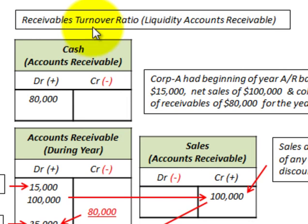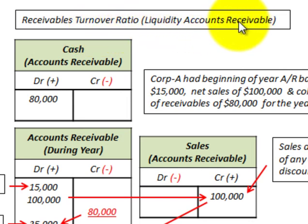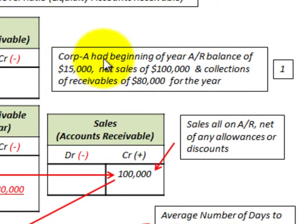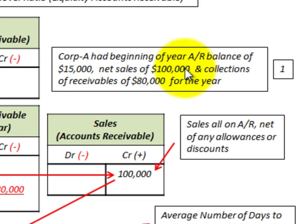Here we're going to be looking at a receivables turnover ratio, and that's the liquidity of accounts receivable. For example, Corporation A had a beginning of the year accounts receivable balance of $15,000, net sales of $100,000, and collection of receivables of $80,000 for the year.